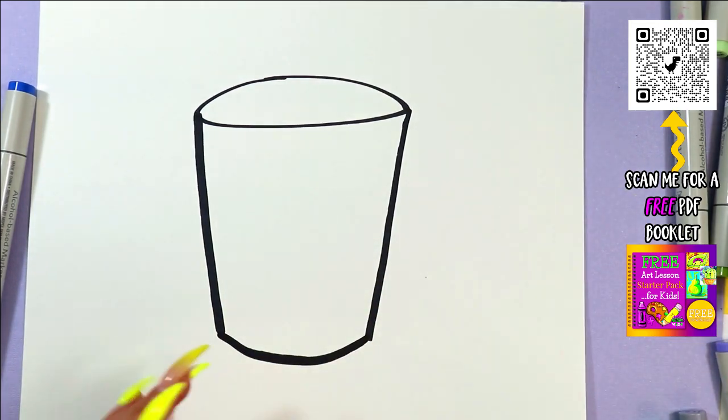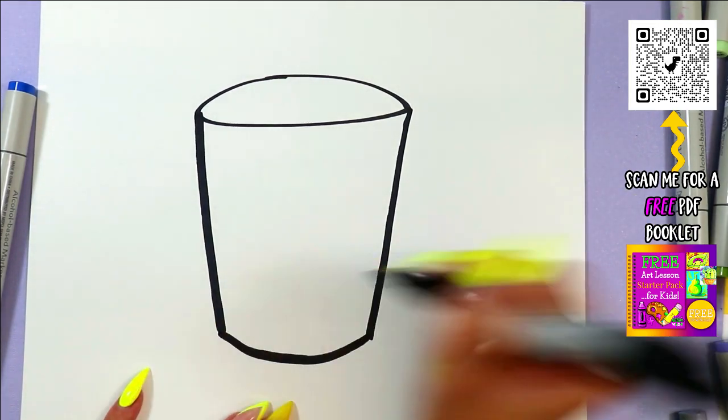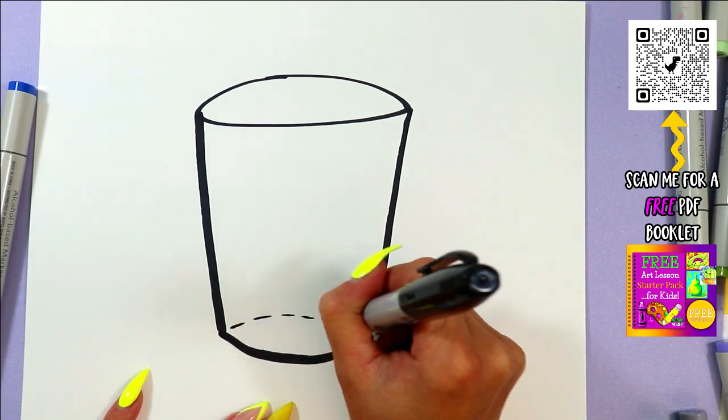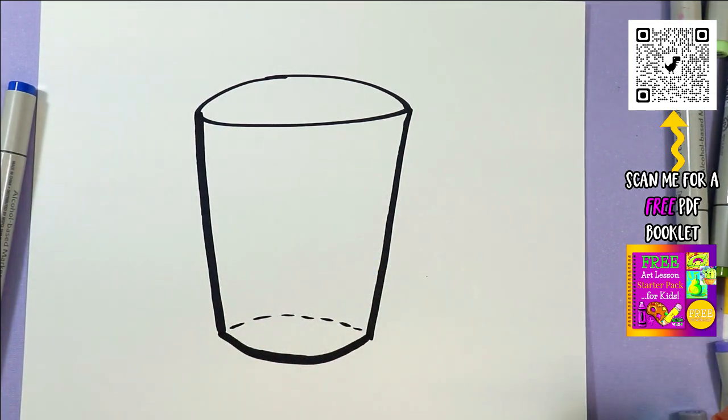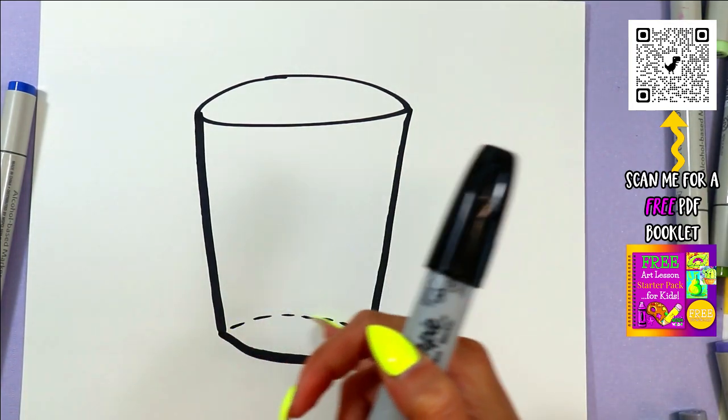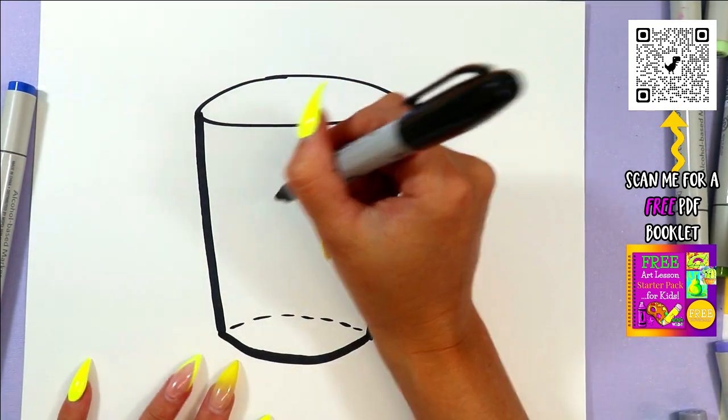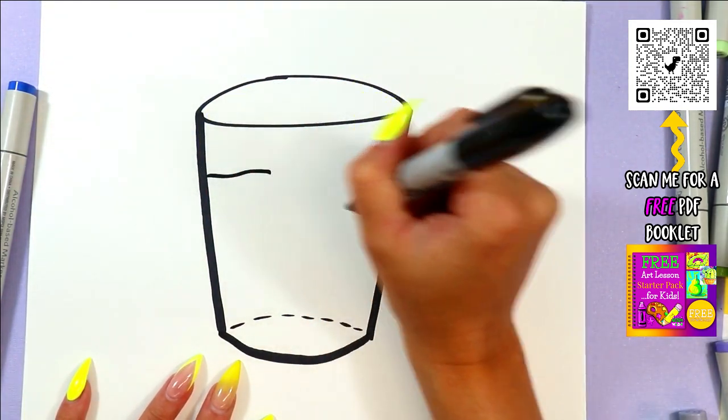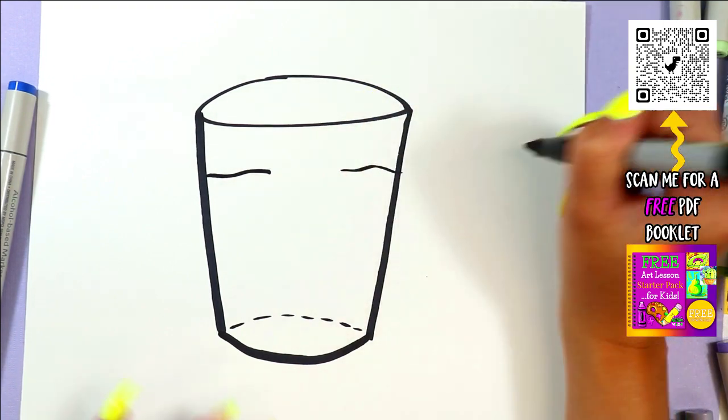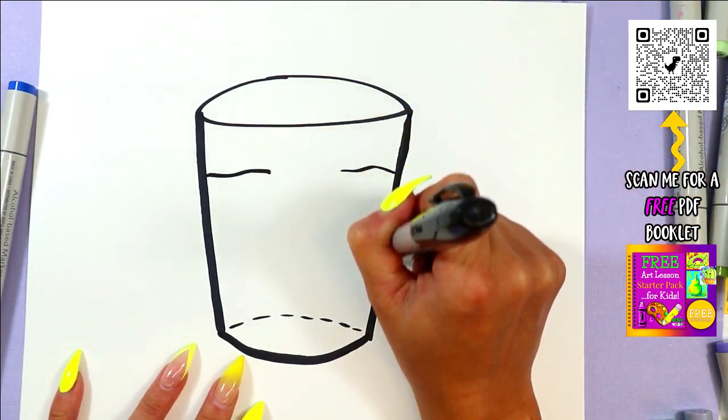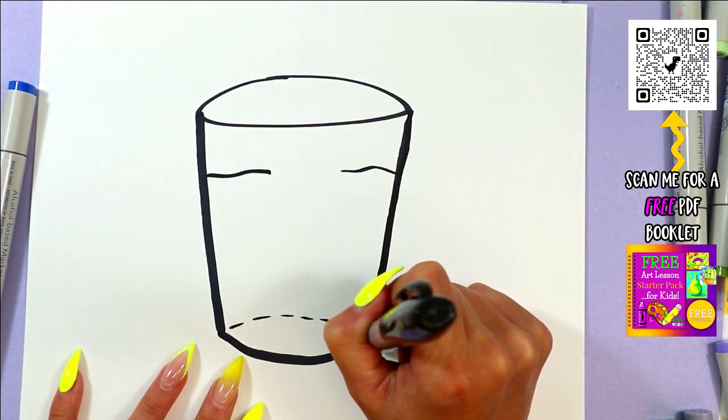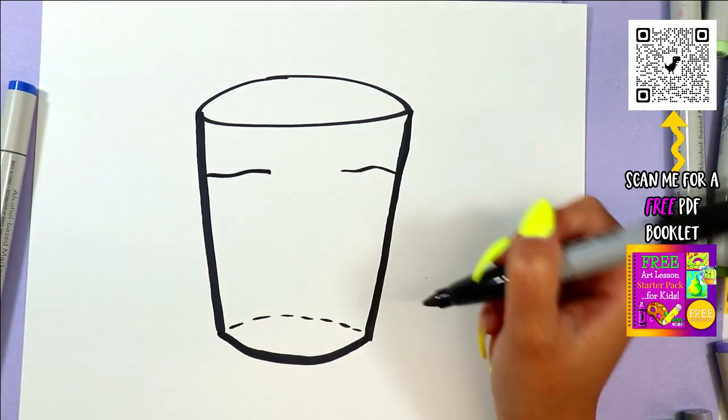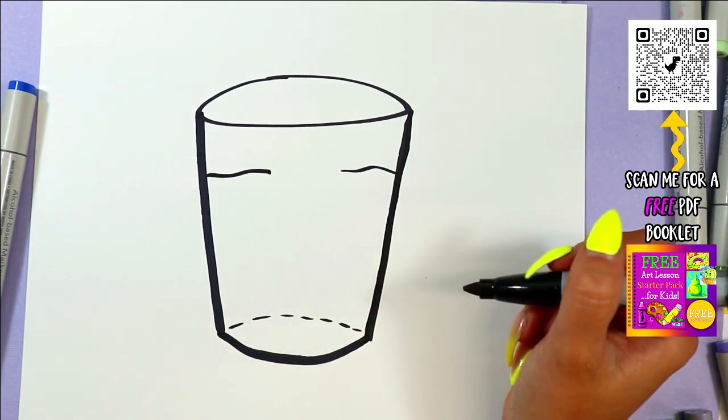Now because lemonade is slightly translucent, we're gonna add some dashed lines to indicate that there is a backside to this. Alright lemonade. I'm gonna draw, well this is a lemonade that's been out in the sun so it's only going to have one ice cube.